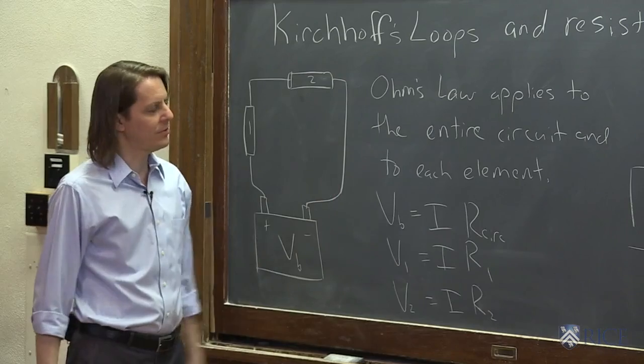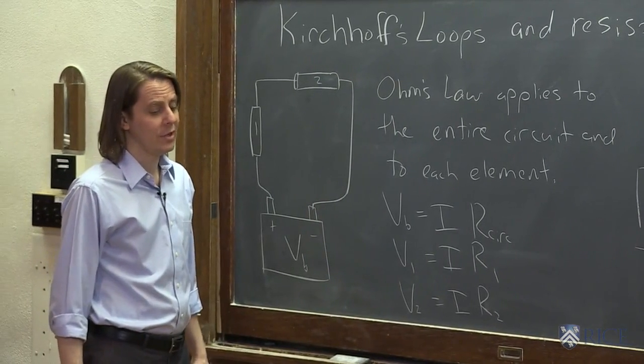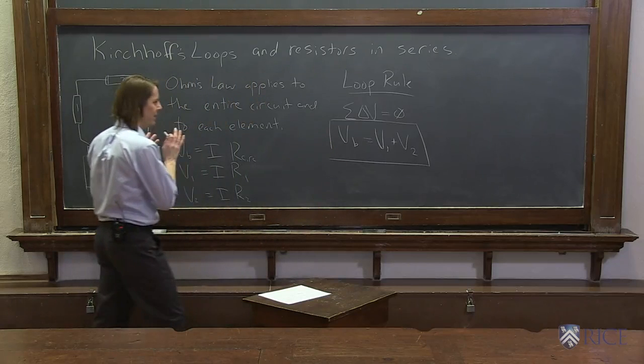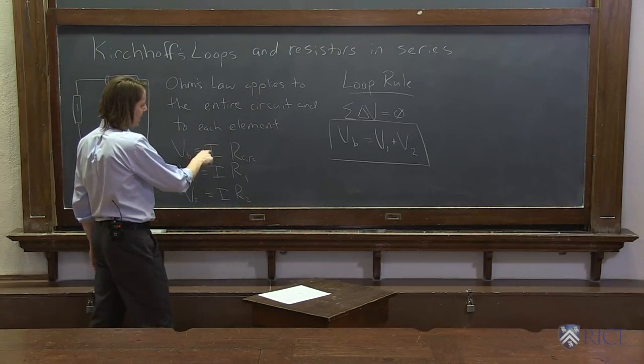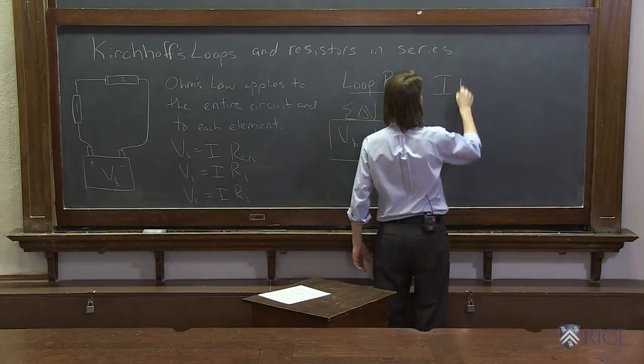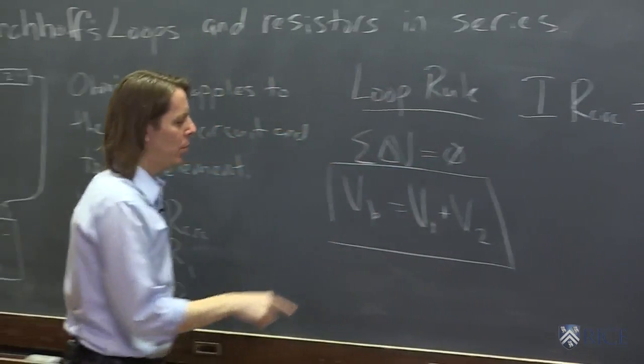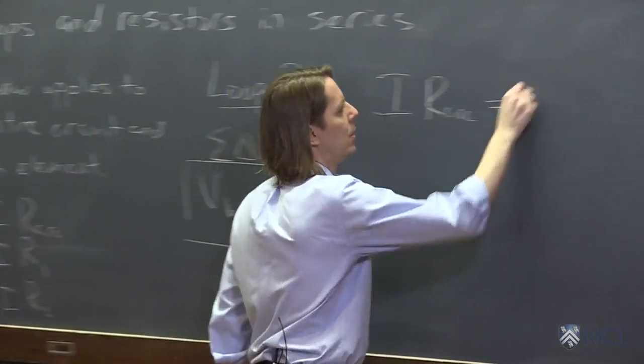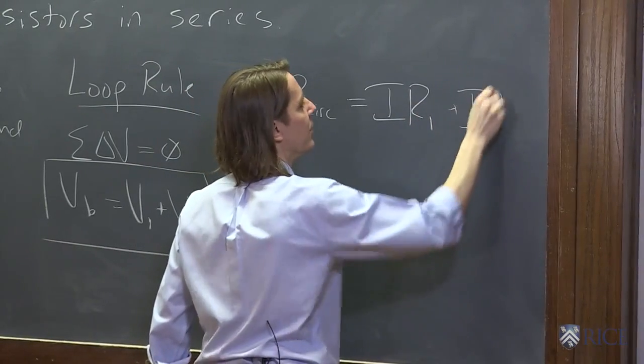So now to solve all this at once, it helps to have some experience and to know what to do. But basically, you write this equation filling in these. So let's see. VB is I times the resistance of the circuit. V1 plus V2, and V1 is IR1, and V2 is IR2.